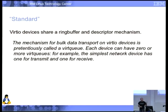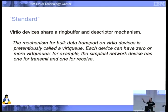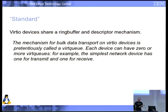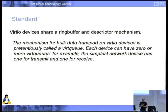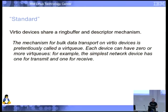We call that a virtqueue. A virtqueue is basically a place where you put descriptors that can be scatter-gather lists of memory — 'here's this memory, here's that memory' — and the device consumes them and tells you when it's finished. We use that mechanism for all our devices. It's called a queue even though it's not technically a queue because it can be evaluated out of order, though for most devices you want it in order. A block device is the obvious exception — it needs to service requests out of order.